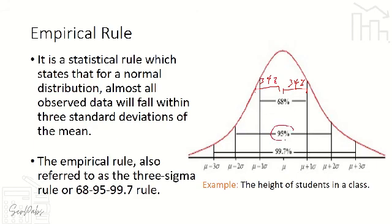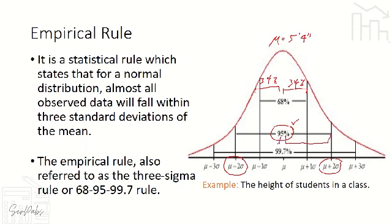For 95%: 95% of the data is 2 standard deviations higher and lower than the mean. Bibiyakin mo, 47.5% is higher than 5'4 — mas matangkad sa 5'4 — and another 47.5% ng estudyante is shorter than 5'4. So all in all, 95% ng ating mga estudyante ay deviated from 5'4 — lumayo ng height sa 5'4.